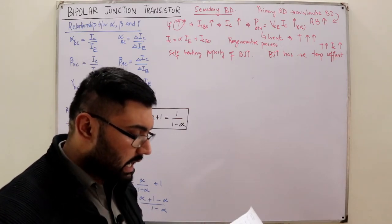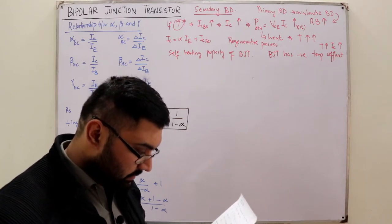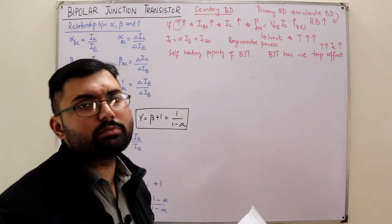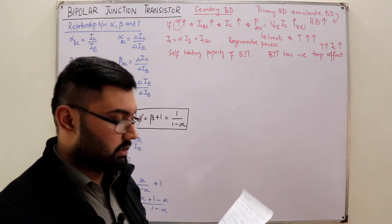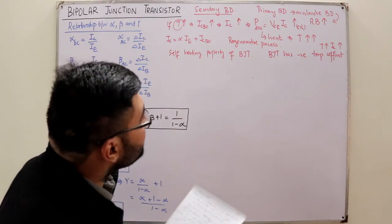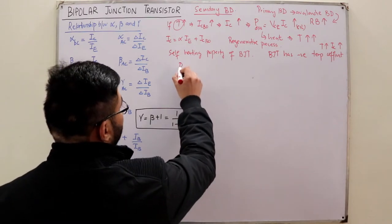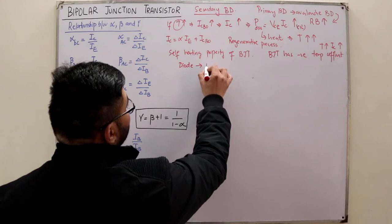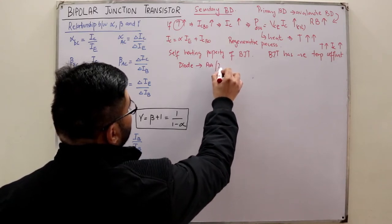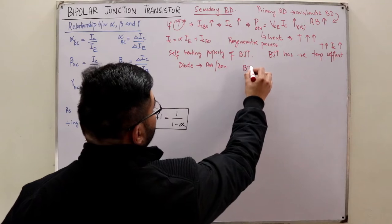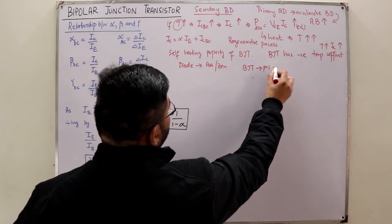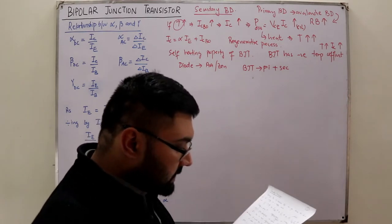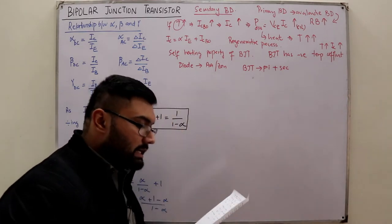To avoid secondary breakdown, proper cooling must be used. Note that in a diode there is only one type of breakdown — either avalanche or Zener — but in a BJT there are two breakdowns: primary (avalanche) and secondary (thermal).